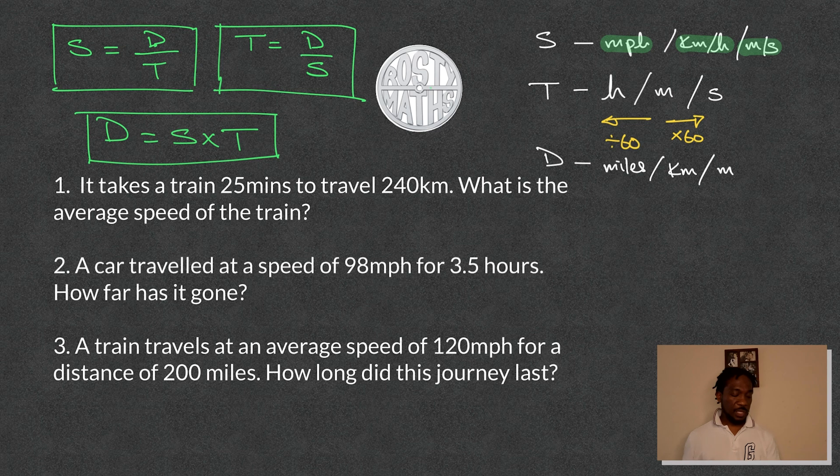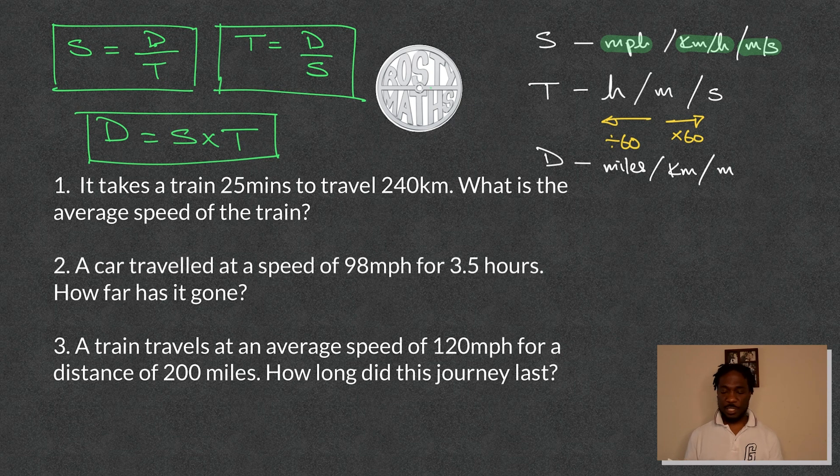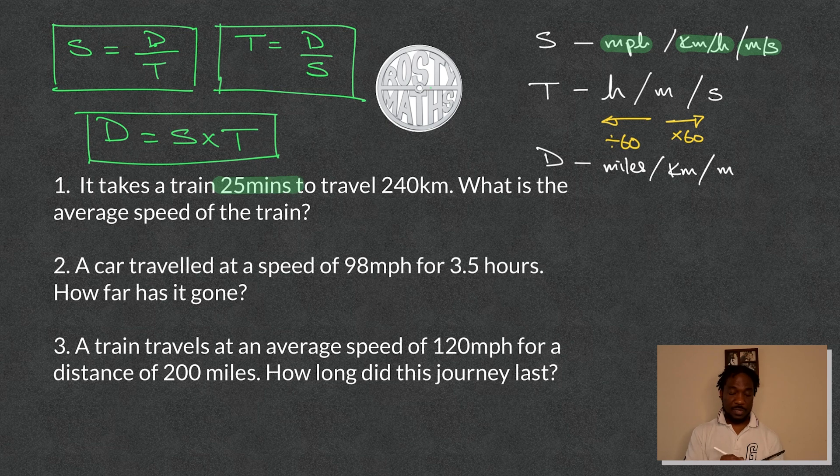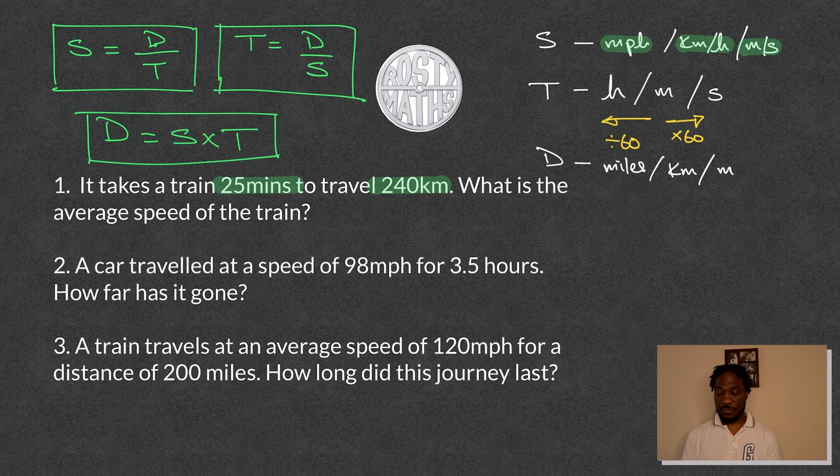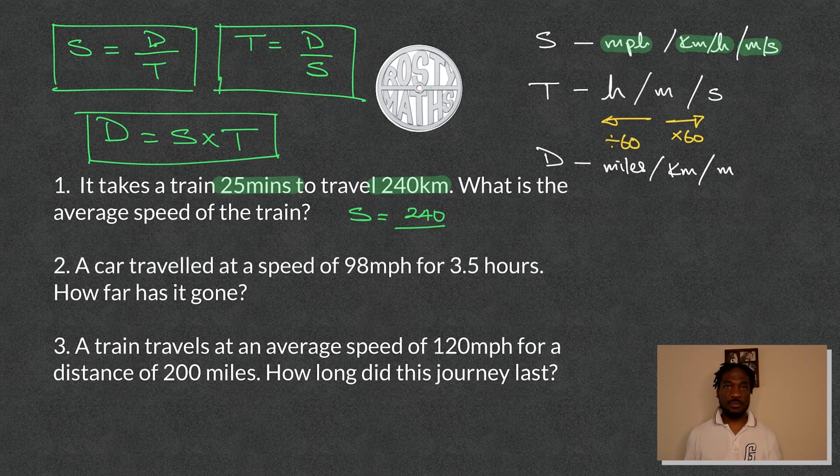Now let's jump into the question. It takes a train 25 minutes to travel 240 kilometers. What is the average speed of the train? So yes, that makes sense because they've given us the time and they've given us the distance and we need to find the speed. So speed is distance divided by time. So that means that the speed will equal to a distance of 240 divided by a time of, uh oh, it's 25 minutes.